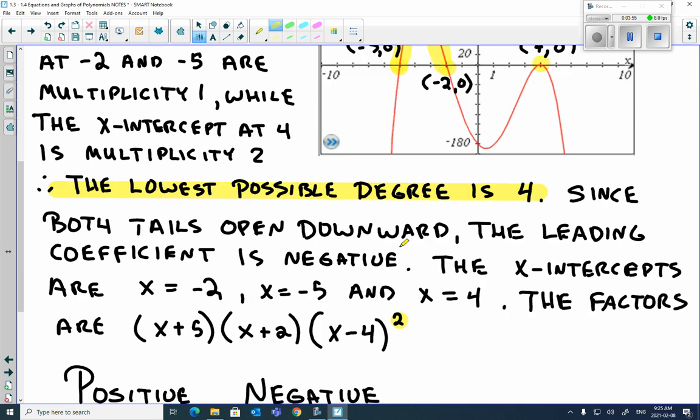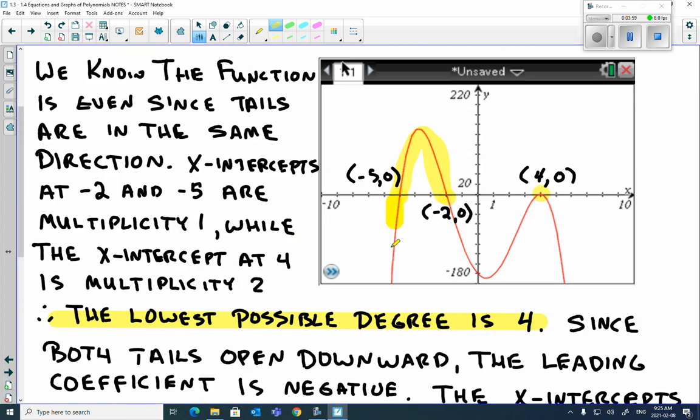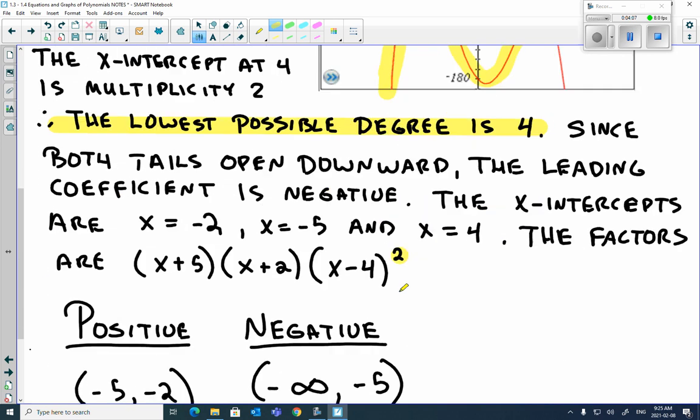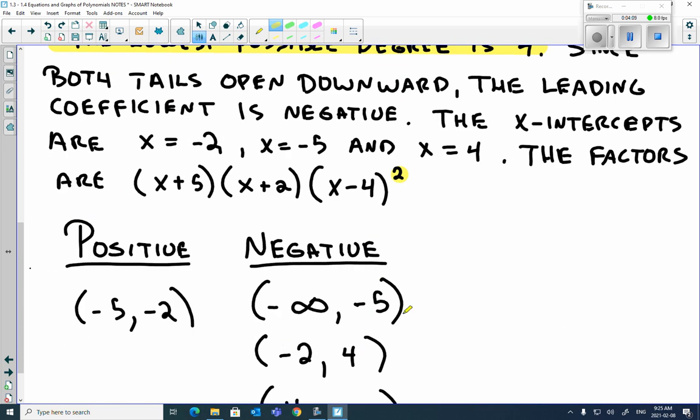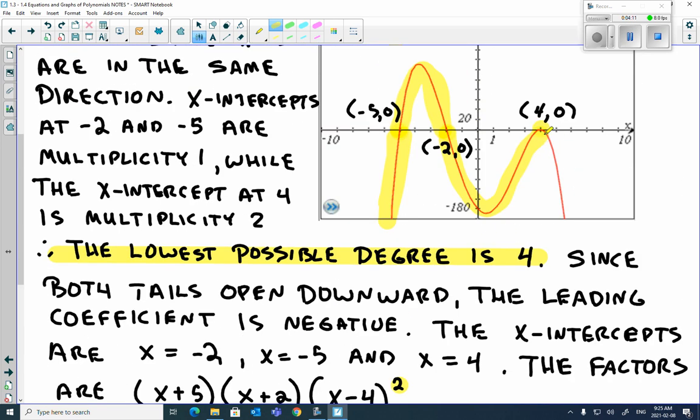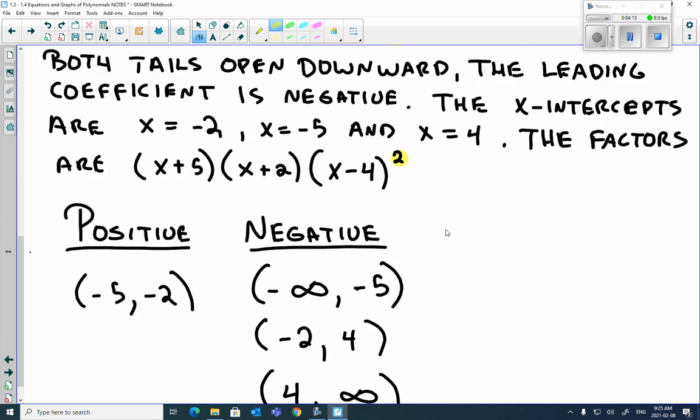Where is it negative? Well, it's negative anywhere from negative infinity to negative 5. So we're talking about this part right here, negative infinity to negative 5. It's also negative from negative 2 all the way up to positive 4. That's the negative, negative 2 to positive 4, not including those points. And then anything greater than 4 over there. So those are all just negative values.